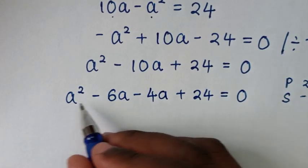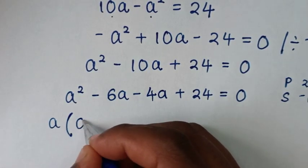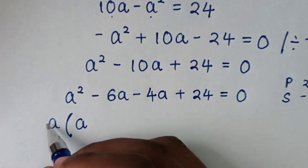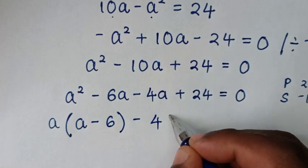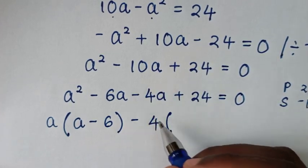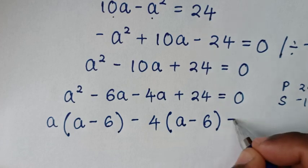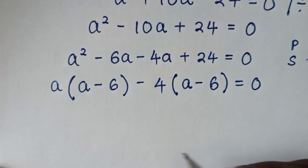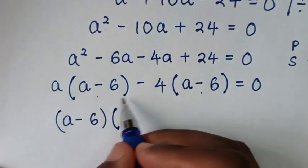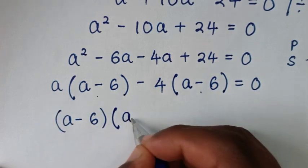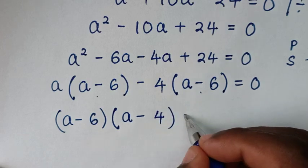Then from here we'll take a out of the first bracket. So a squared divided by a is a, and negative 6a divided by a is negative 6, giving a bracket a minus 6. Then we'll take negative 4 out of the second bracket: negative 4a divided by negative 4 is positive a, and 24 divided by negative 4 is negative 6, giving negative 4 bracket a minus 6, is equal to 0. So a minus 6 is common, giving bracket a minus 6 times bracket a minus 4, is equal to 0.